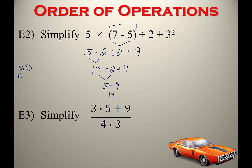A quick reminder about exponents: a squared number means a number times itself — it does not mean times 2. So 3 squared means 3 times 3, which equals 9.